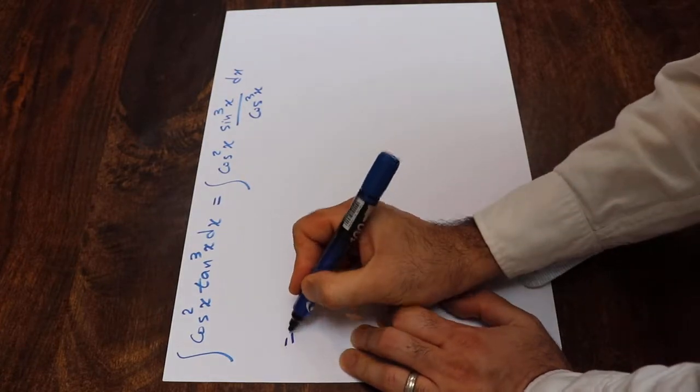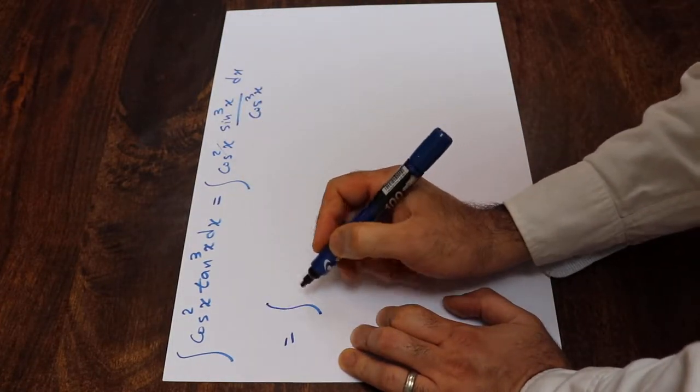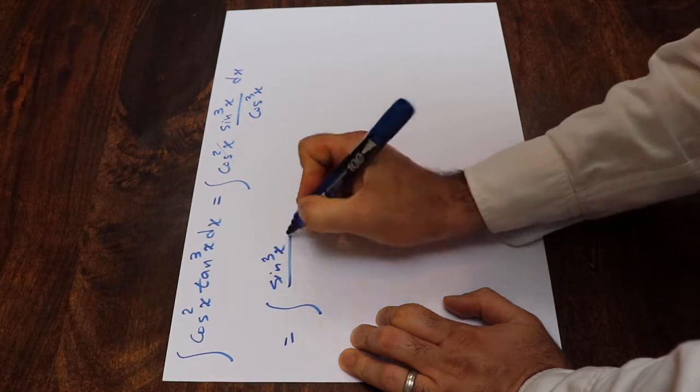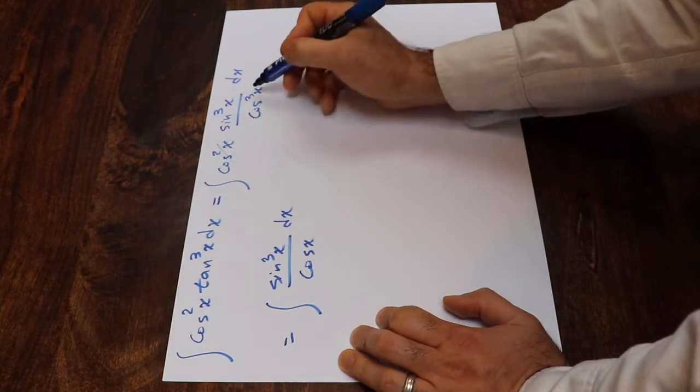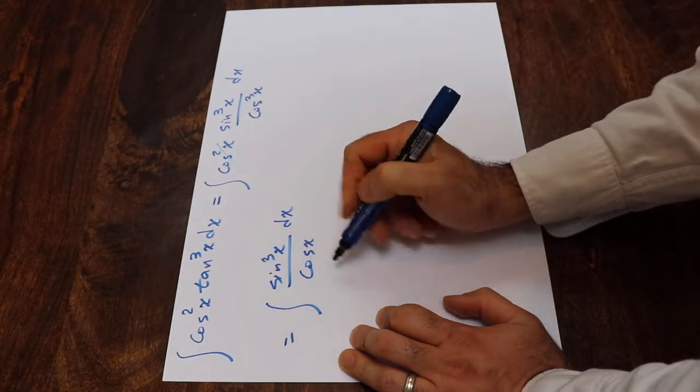And then here, this cosine is out. That will be equal to integral of sine 3x divided by cosine x dx. Because this is power of 2, this is power of 3, so there will be one left here.